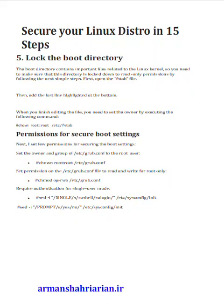Step 5: Lock the boot directory. The boot directory contains important files related to the Linux kernel, so you need to make sure that this directory is locked down to read-only permissions. First, open the fstab file. Then add the last highlighted line at the bottom. When you finish editing the file, you need to set the owner by executing the following command.